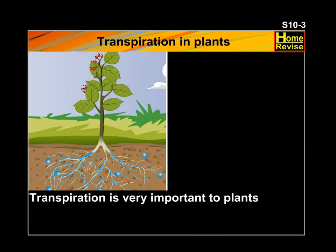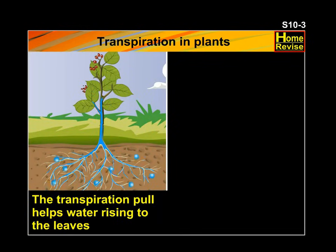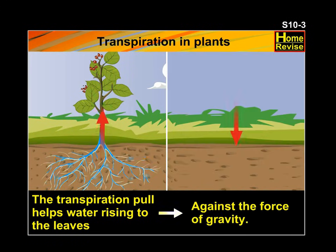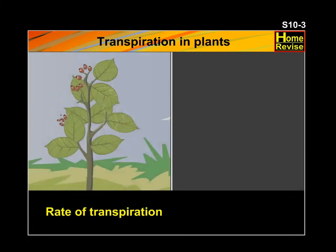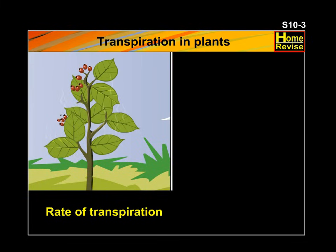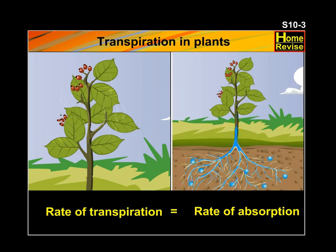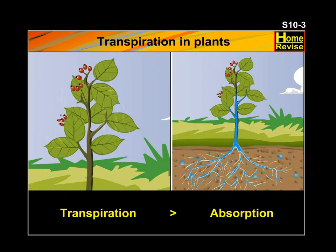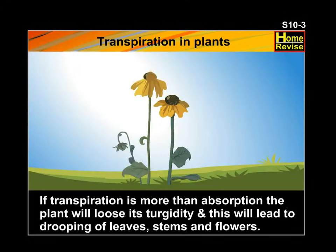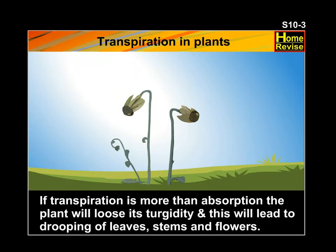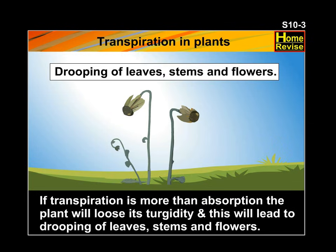Transpiration is very important to plants, as the transpiration pull helps water in rising to the leaves against the force of gravity. As the rate of transpiration increases, so does the rate of absorption of water. If transpiration is more than absorption, the plant will lose its turgidity and this will lead to drooping of leaves, stems and flowers.